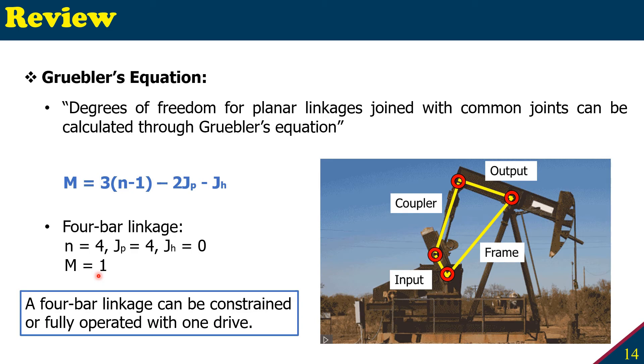And that's why M=1 is useful - to know how much drive we need to fully operate a 4-bar linkage. And this can also be applied to other linkages.